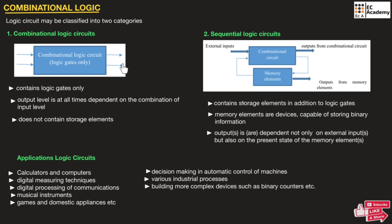In a combinational logic circuit, the output will depend on the combination of input levels. A combinational circuit along with a memory element is known as a sequential logic circuit. A sequential circuit consists of a combinational circuit to which the memory element is connected to form a feedback. These memory elements are capable of storing binary information.